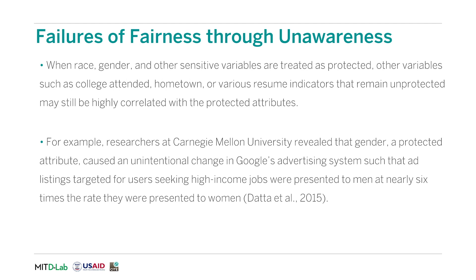When race, gender, and other sensitive variables are treated as protected, other variables such as college attended, hometown, or other resume indicators that remain unprotected may still be highly correlated with these protected attributes. Thus, ignoring the protected attributes altogether may not reveal these hidden correlations in data. This is called redundant coding. In one example, researchers at Carnegie Mellon University found that gender caused an unintentional change in Google's advertising system, such that ad listings targeting users for high-income jobs were presented to men at nearly six times the rate they were presented to women. This may be an example of fairness to unawareness.